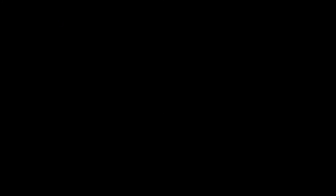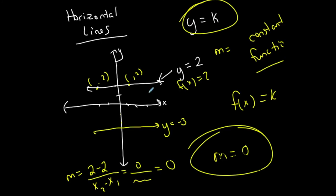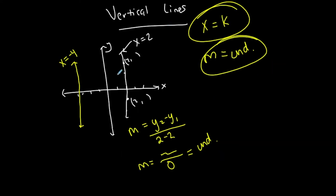So to summarize: vertical lines and horizontal lines — y equals some number are also known as constant functions, and the slope of them is 0. Vertical lines are not functions; x equals some number, and their slope is undefined.